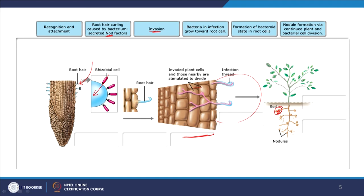The plant benefits from this: despite spending more energy in making this tumor-like root nodule growth, it benefits because it gets a rich amount of fixed nitrogen from the atmosphere, allowing it to make nitrogen-rich legumes, fruits, and seeds. The bacteria benefit because the plants — being phototrophic and making food easily — share glucose and other food with the microbes. So microbes fix nitrogen for the plant, and the plant gives them food in return.